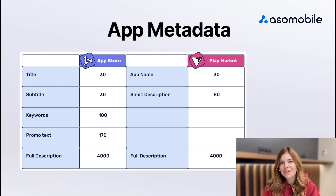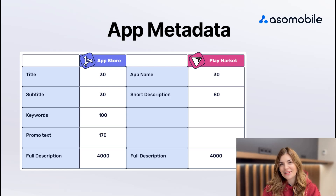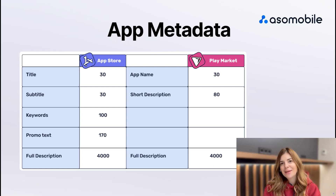For both platforms, the title is crucial for indexing, and you must strategically use these 30 characters for relevant keywords. There's also a subtitle with 30 characters to add more keywords or a brief description. The hidden keywords field is essential for search rankings and allows up to 100 characters.